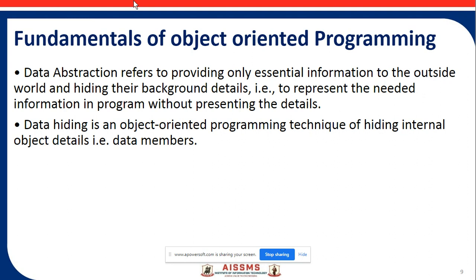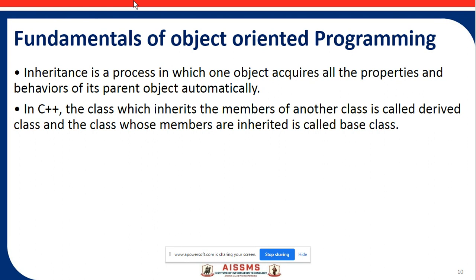The next point is data abstraction and data hiding. Data abstraction refers to providing only essential information to the outside world and hiding the background details — representing the needed information without representing the implementation details. Data hiding is an object oriented programming technique of hiding internal object details, that is, the data members.